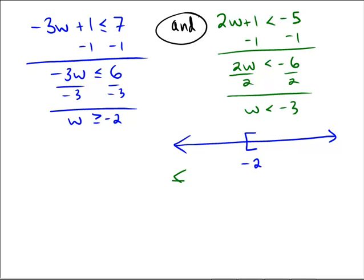And then, for the other one, we have negative 3. Negative 3 would be just a little bit lower than that. And that one's supposed to be shaded to the left, because it's less than negative 3.